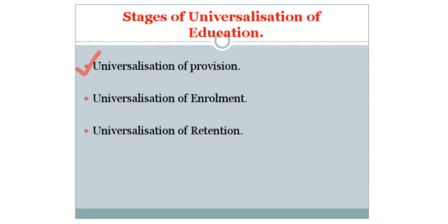To a fairly large extent we have succeeded in this direction. Number 2: Universality of Enrollment. It means that all children between the age group of 6 to 14 be enrolled in primary school. The Kothari Commission thinks that by the year 1970, 81 to 90% of all children between the age group of 6 to 11 will be enrolled in schools.